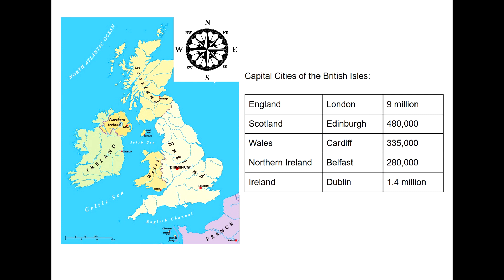As well as looking at these different terms, we can quickly review the capital cities of the British Isles. So we've got London in England, which has got a population of around about 9 million. Scotland's capital is Edinburgh, with about 480,000 people. Wales' capital is Cardiff, with a population of around 335,000 people. Belfast is Northern Ireland's capital, with around 280,000 people.